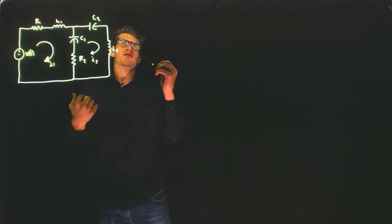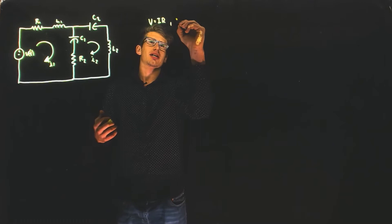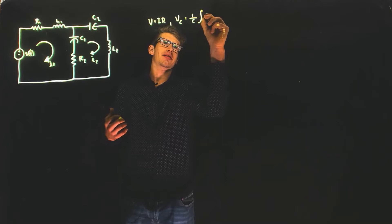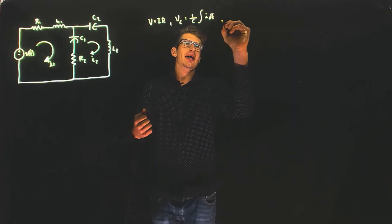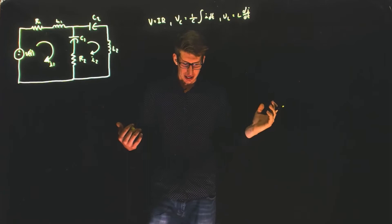We know from our previous classes that the voltage across a resistor is equal to the current through the resistor times the resistance. The voltage across a capacitor is equal to one over the capacitance times the integral of the current with respect to time. And for inductors the voltage is equal to the inductance times the derivative of the current with respect to time. We're going to use this going forward to create our differential equations.